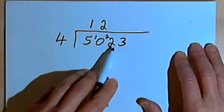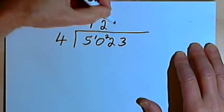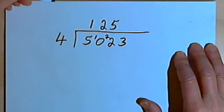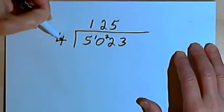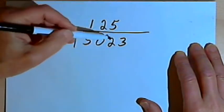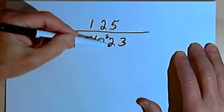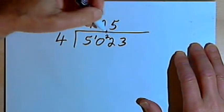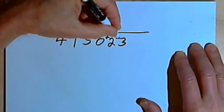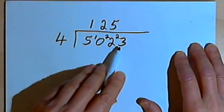So 4 goes into 22 5 times, I'll write the 5 down above the 2, multiply 5 times 4 is 20, and in my head I'll subtract 22 minus 20. I'm going to end up with a 2. So I'll put that 2 in front of the next digit, which is a 3.